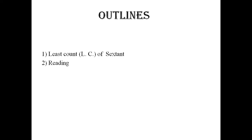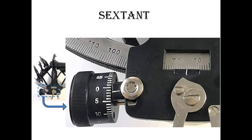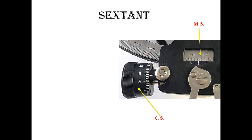Here I am showing the instrument — the sextant. You can see there are two scales. You can see a better picture in the zoomed part. Here the main scale is a circular scale. This one is reference line one and this one is reference line two. Reference line one helps to read the reading on the main scale, and reference line two helps with reading the circular scale.